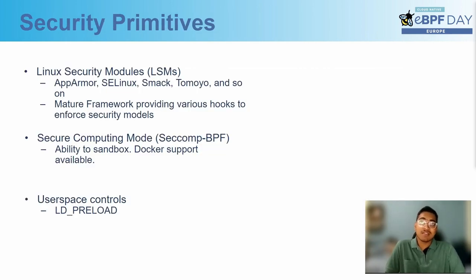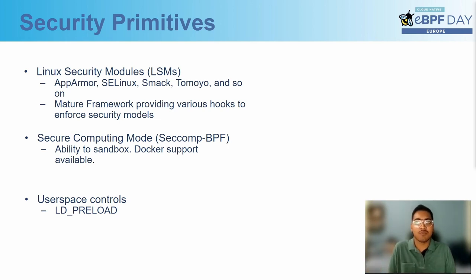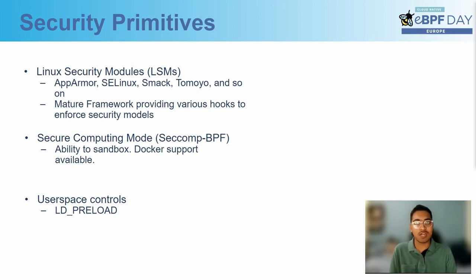What existing mitigation mechanisms do we have for enforcing runtime security? We have Linux security modules — LSMs like AppArmor, SELinux, and Landlock. These are a mature ecosystem of hooks to enforce various security models. LSMs handle the time-of-check and time-of-use problem very well. Then we have Seccomp, Secure Computing, which helps in sandboxing by restricting actions available to the containers.